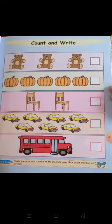Cars. 1, 2, 3, 4, 5, 6, 7. Seven cars. And the last one is a van. One van.